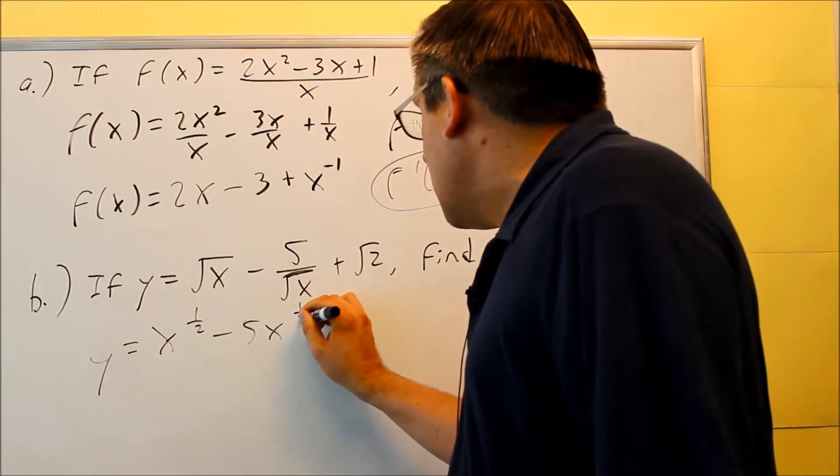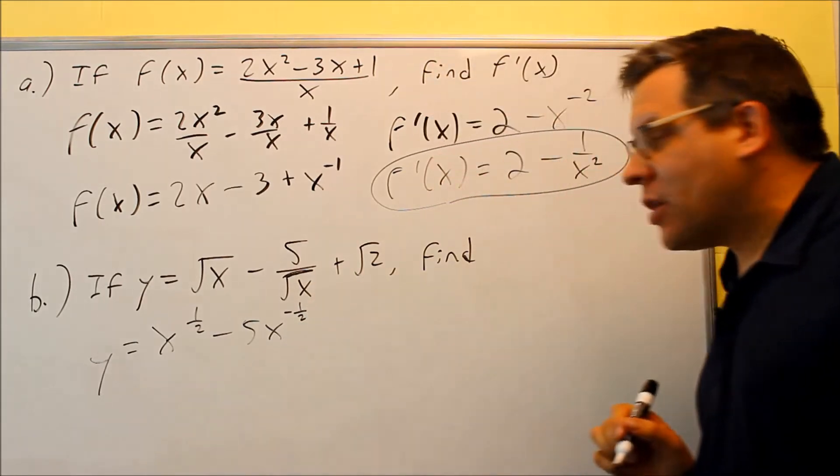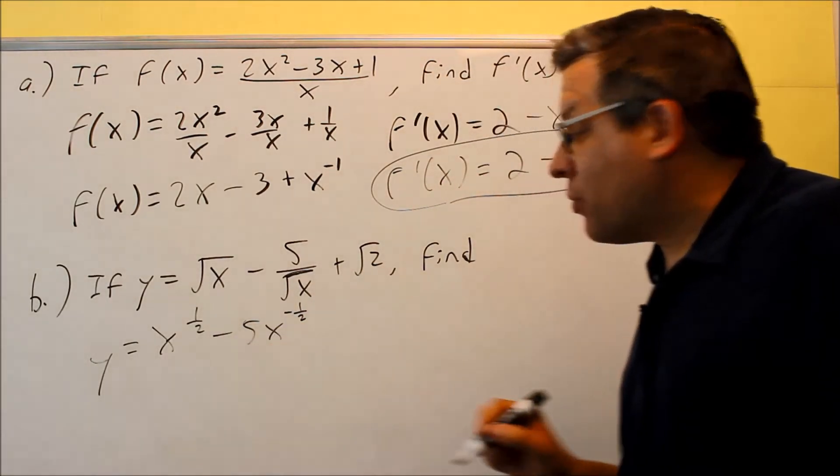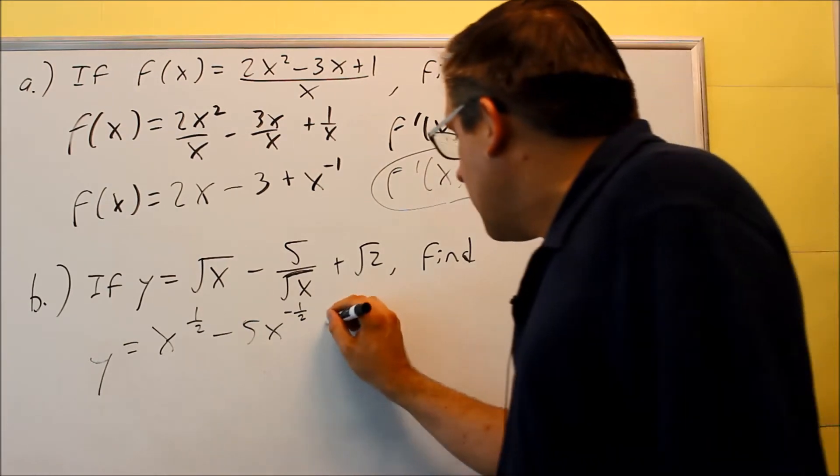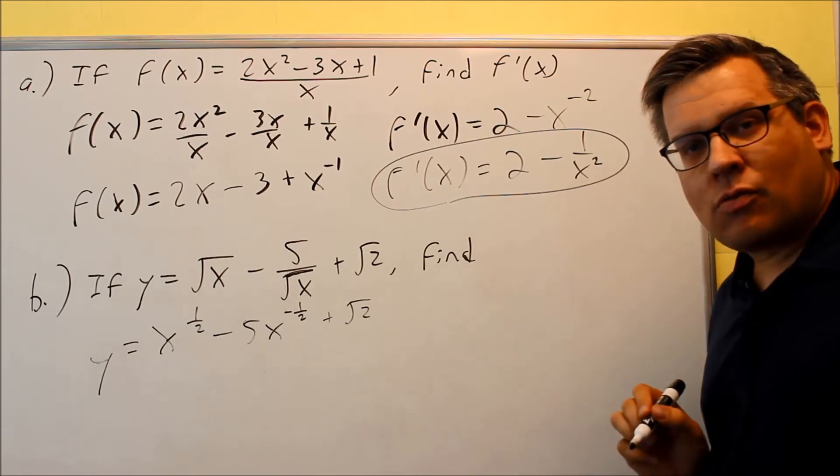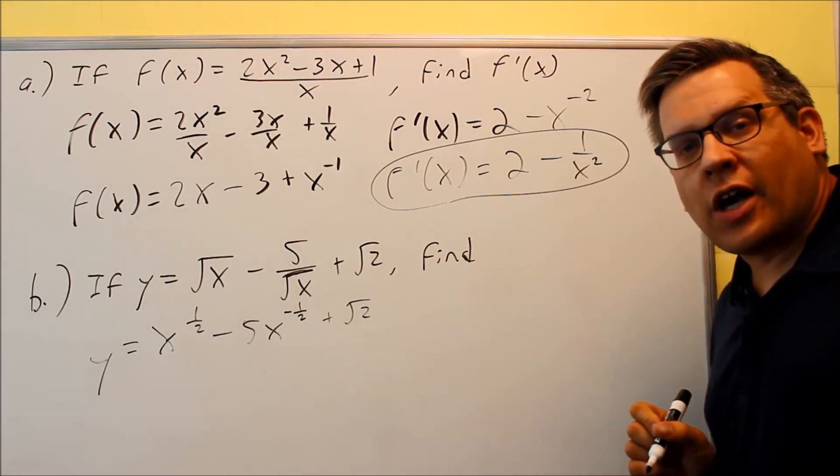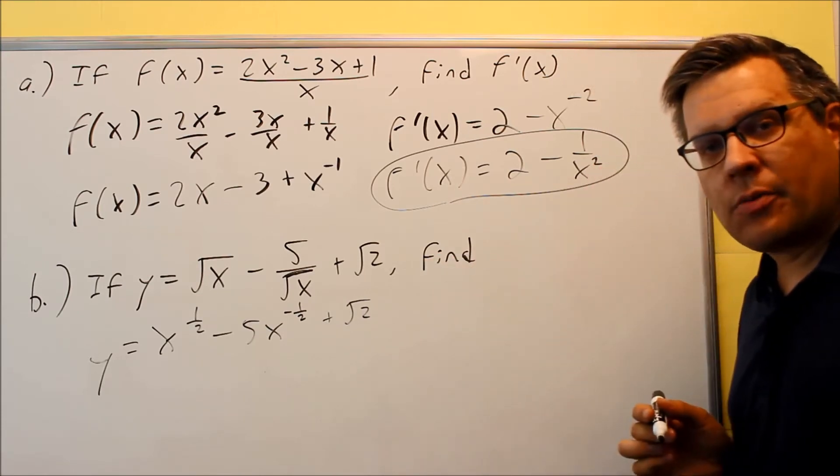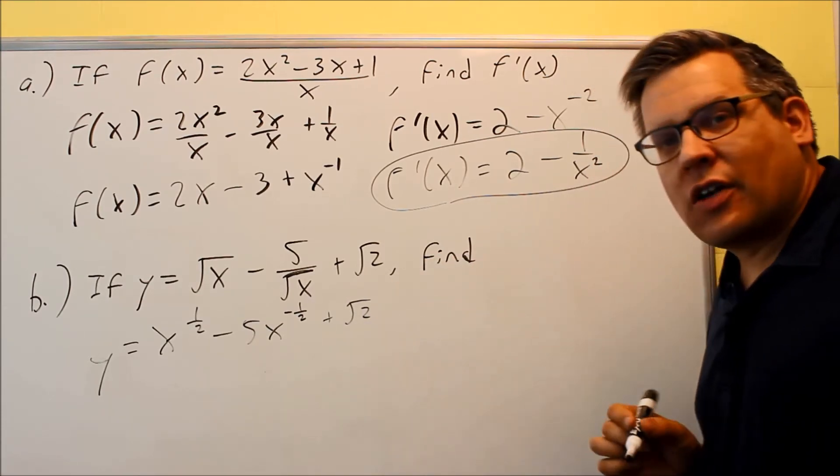This one right here is a minus 5, and I have x to the negative 1 half, because the square root was originally on the bottom of the fraction, and the minus 5 we put out front there. The square root of 2, I'm just going to leave it as is, because that's a constant. We can get a number in our calculator for that. The derivative of it is going to be a 0. So this we don't need to change into a power, because we know the derivative of that is going to give us a 0.